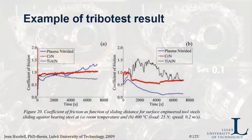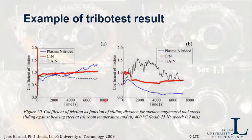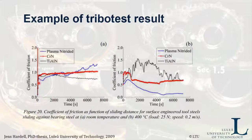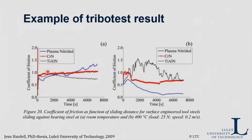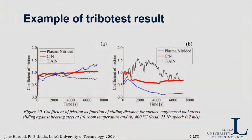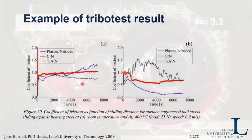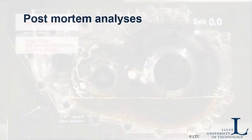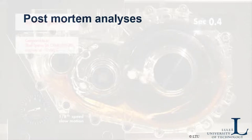The tribo testing equipment plots friction coefficient against cumulative time. Here we have different types of coatings with different friction coefficients — this data is from room temperature testing. Part B shows testing at 400°C. Titanium aluminum nitride shows a jerky friction behavior, whereas chromium nitride is stable for a while then significantly reduces before stabilizing, and plasma nitrided coating becomes stable after 4000 cycles. These are the different types of analysis possible.